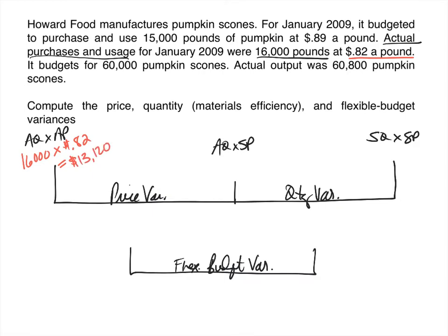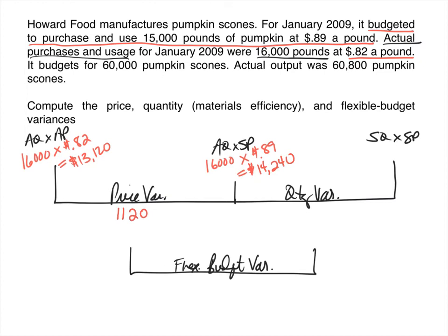Moving to peg two, actual quantity is again 16,000. Standard price is the price we should have paid per pound — the story says we budgeted 89 cents a pound, so that is our standard price. 16,000 × $0.89 = $14,240. The price variance is the difference between pegs one and two: $14,240 − $13,120 = $1,120.